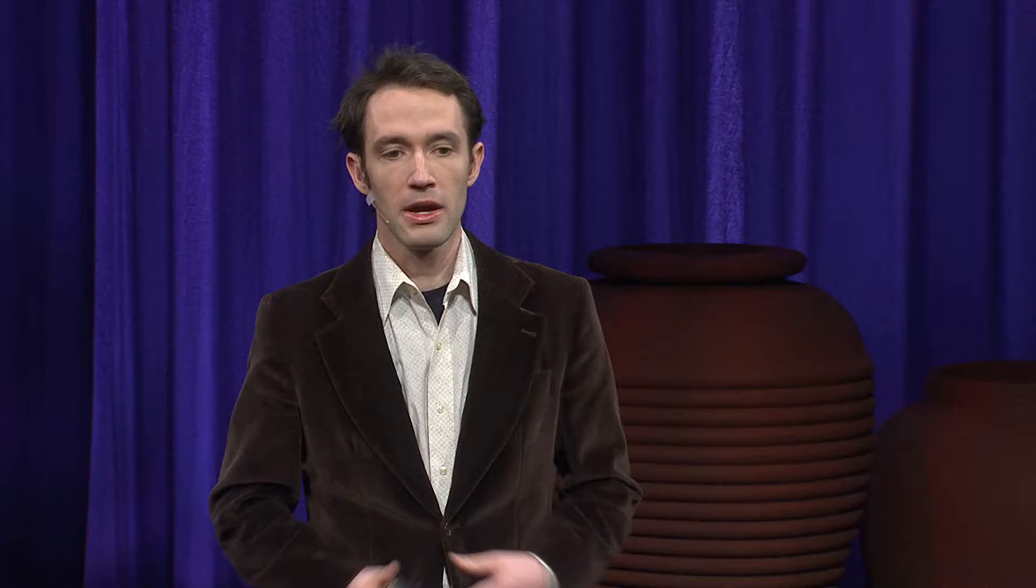Here, we're using it to perform music. Each of the different objects on the table represents a different audio track, and by moving them around, we're creating music.